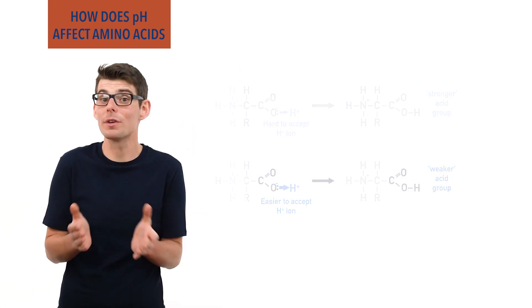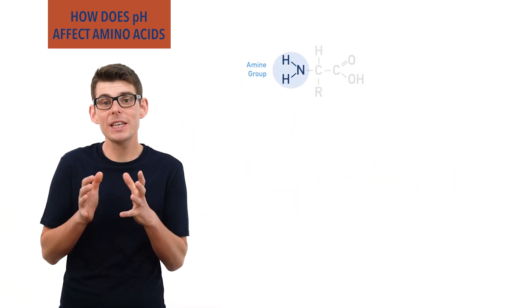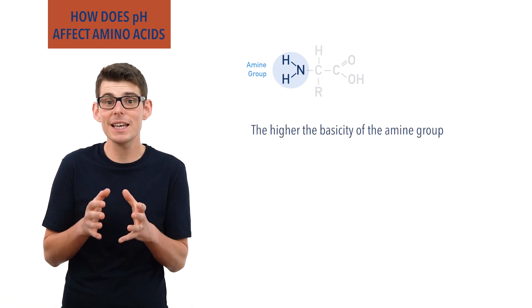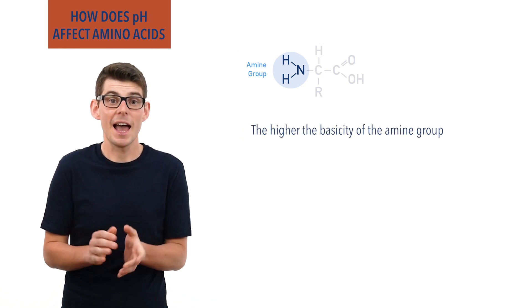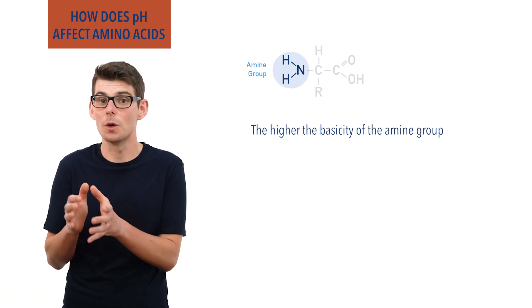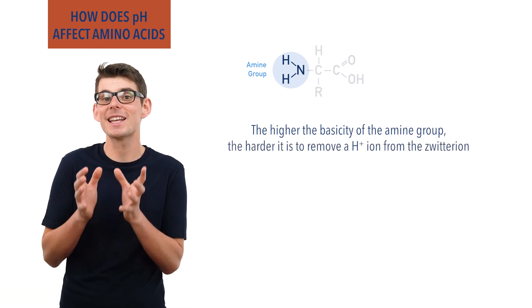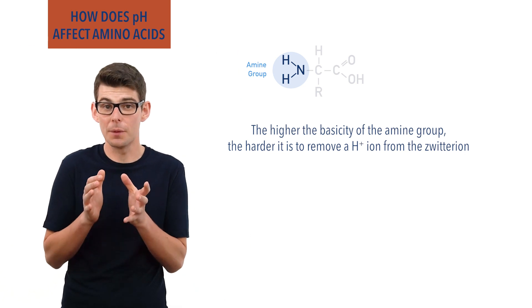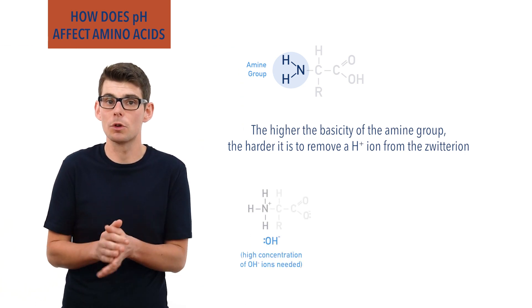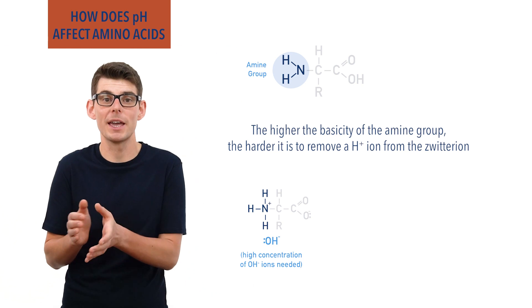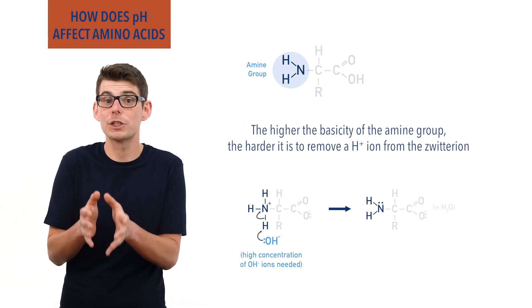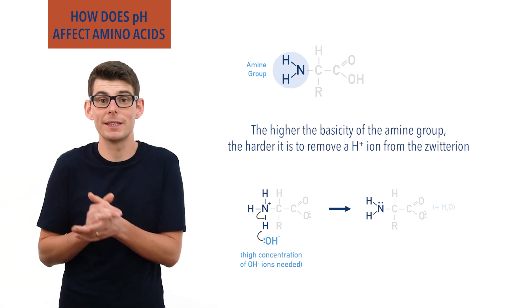It's the same story for the amine group. If the amine group has a high basicity, that means it easily accepts H+ ions. And if it does easily accept one, it isn't going to want to let it go either, meaning it takes a high concentration of OH- ions to force the ammonium group in a zwitterion to give up a H+ ion and reform the NH2 group, compared to an amine group with a low basicity.